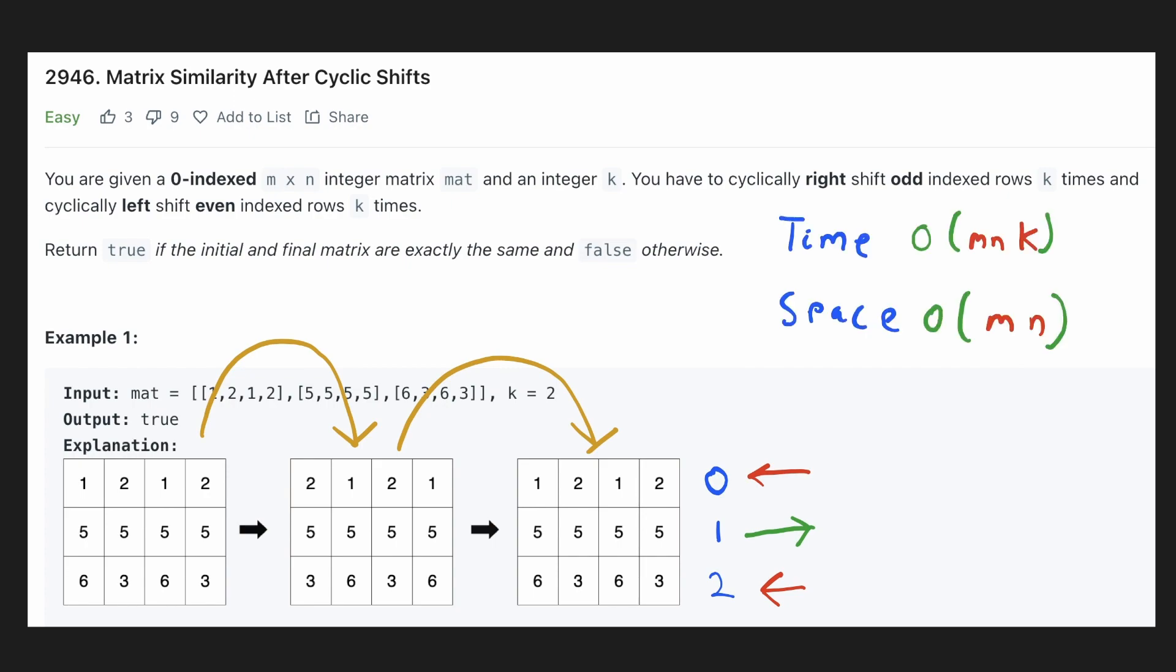The time complexity in this case would be the dimensions of the matrix multiplied by the k operations because for each rotation we'll have to traverse the matrix and since we'll have to copy the original matrix the space complexity would be O(n).